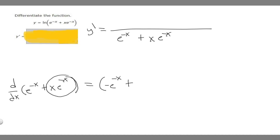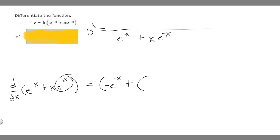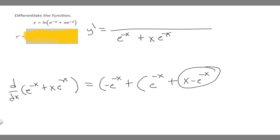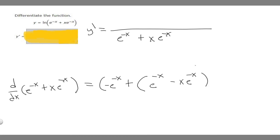Now we find the derivative of x times e to the minus x using the product rule, since it's two functions multiplying each other. The derivative of x is 1, times e to the minus x, giving e to the minus x. Then we add x times the derivative of e to the minus x, which is minus e to the minus x, giving minus x·e to the minus x.